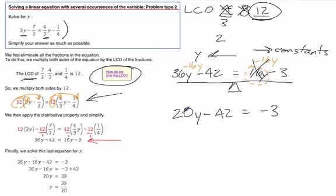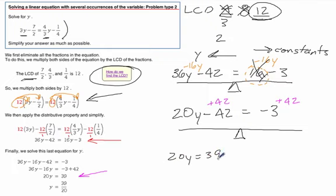We now have all of the variables in one spot. And this looks just like the problems we've solved before, where we know we want to add a 42 to both sides. And that's what is happening right here. We end up with a 20y equals 39 divided by 20. And there's our answer, 39 over 20.